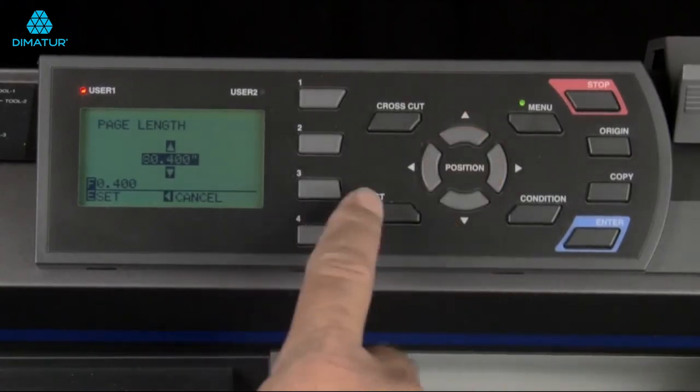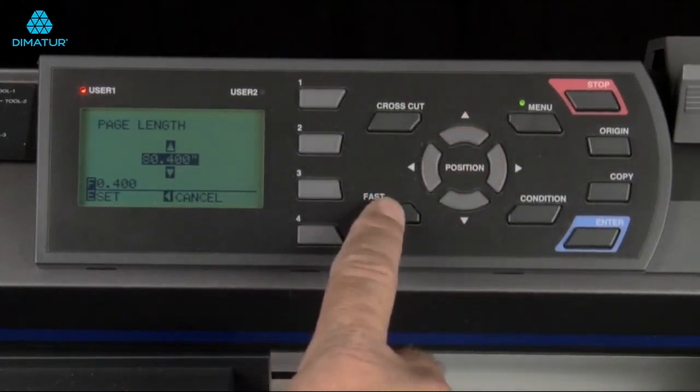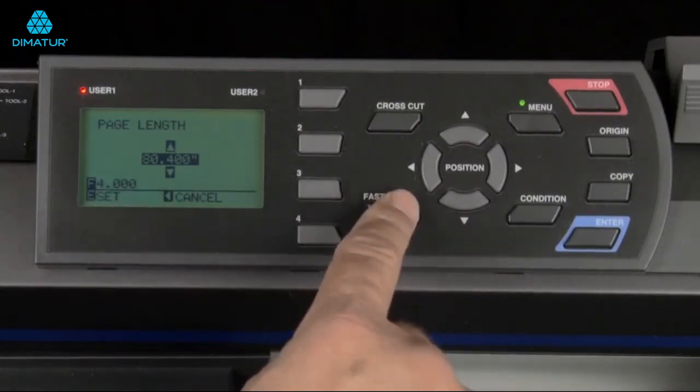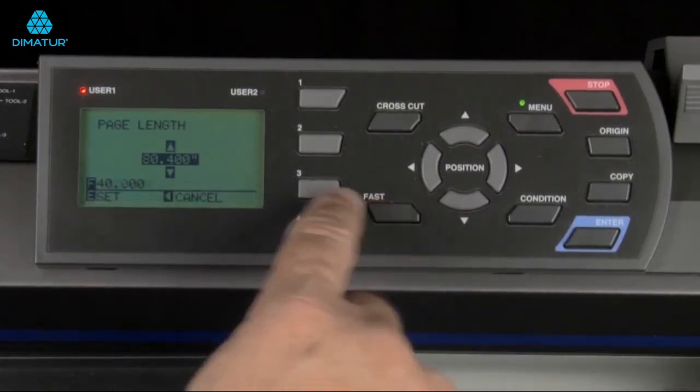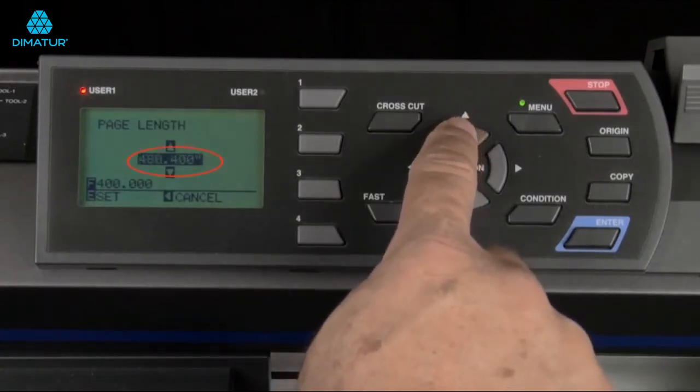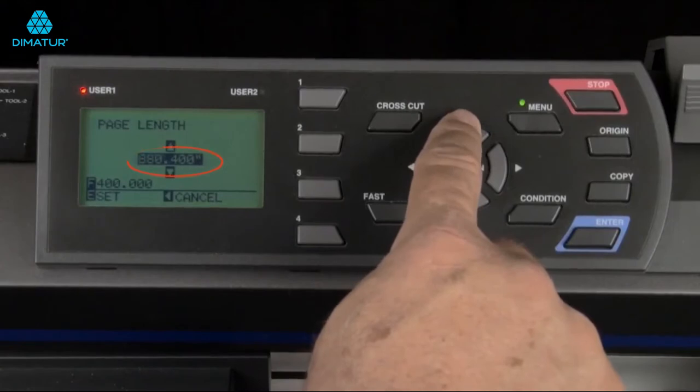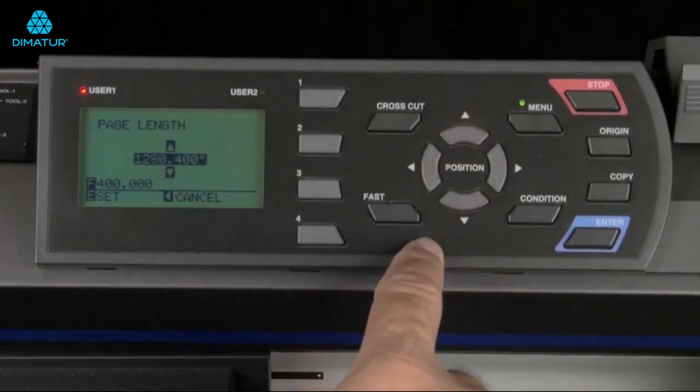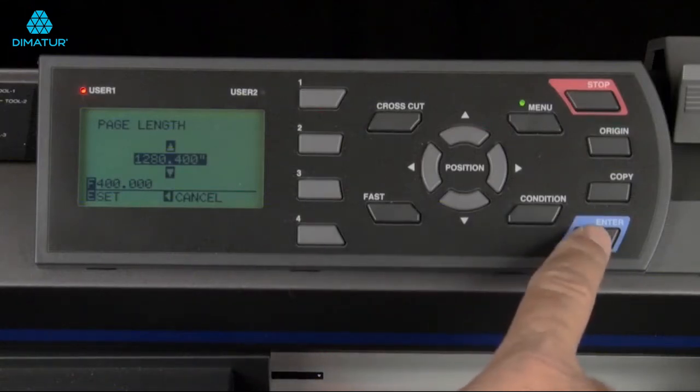As you can see, this is a little slow, but if we press the fast key, we can increase the increments to a higher value. In this case, we'll increase it to four hundred inch increments at a time. Now when we press the up arrow, notice the value significantly increasing each time the up arrow is pressed. Once the value is set, press enter to accept the change.